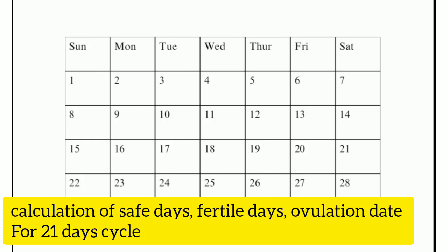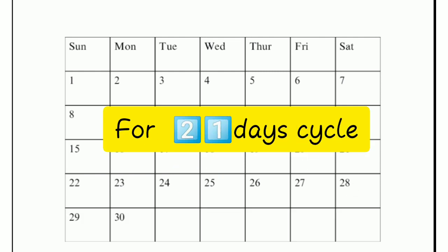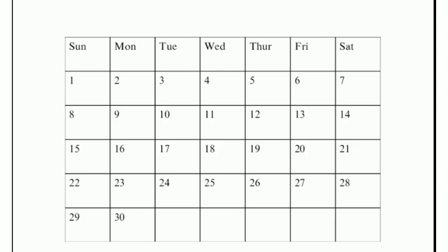We are going to learn how to calculate the safe days, the fertile days, as well as the ovulation date — estimating the ovulation date for a 21-day cycle.